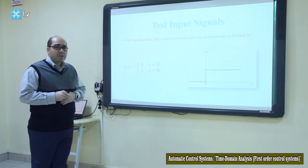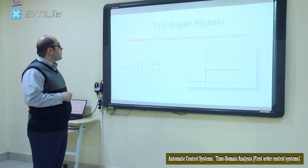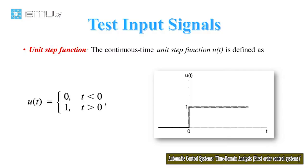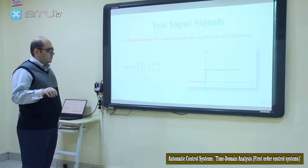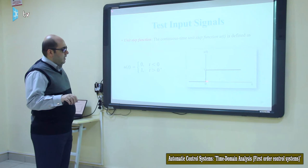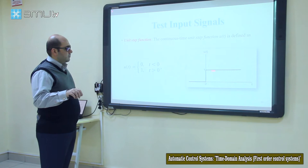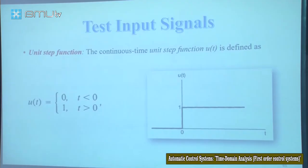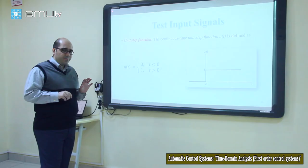Let's talk about the first test input signal. The first one is the unit step function. As you see here, u(t) is defined as 0 for t less than 0, and 1 for t greater than 0. This is the step function as shown in the figure. This is the first test input function which we apply as an input to our system.